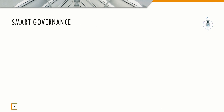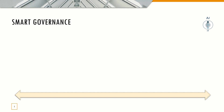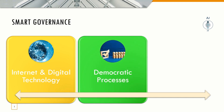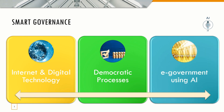Smart governance allows the use of internet and digital technology to create a progressive work environment. It is about using technology to facilitate better planning and decision making. Smart governance is also about improving democratic processes and transforming the ways in which public services are delivered. It is also about e-governance that uses AI and Internet of Things.